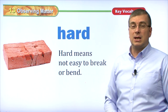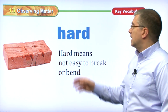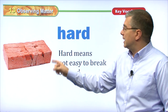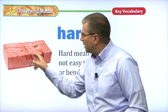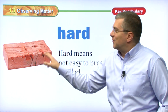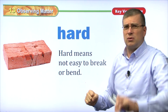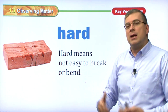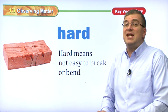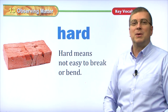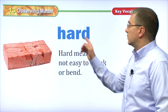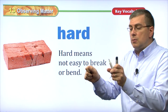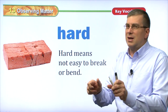Another adjective we can use when observing matter is the word hard. Hard means not easy to break or bend. This looks like a brick — it's not easy to break it. However, this brick has been cracked. But if a brick doesn't have any cracks and you hit it — don't do this — you can't break it. Sometimes you see karate champions hitting a brick trying to break it. The reason they use brick is because it's hard to break. If it was easy, anybody could do it. So if something is hard, it's not easy to break or bend it. To bend means to make something flex so it's not straight — you put a little curve into it. You can't bend a brick.